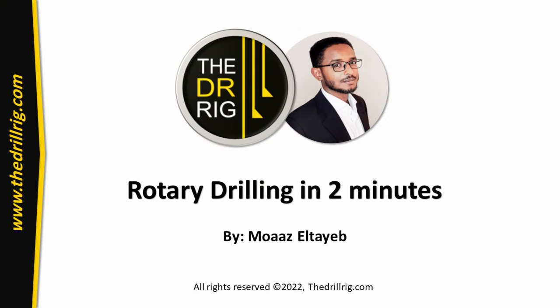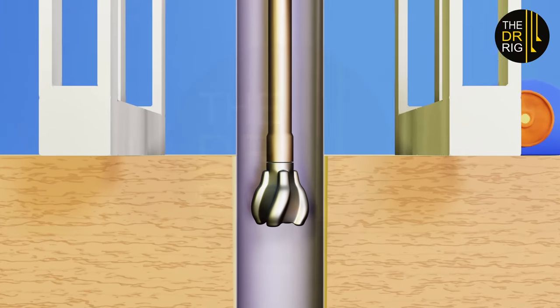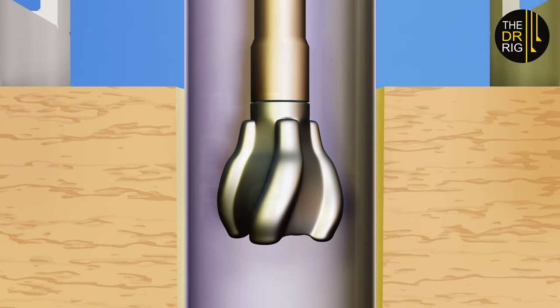This is a brief overview of oil and gas rotary drilling in less than two minutes. In rotary drilling, the drill bit has to be rotated and pushed against the formation.